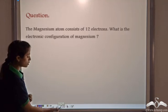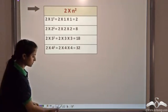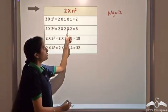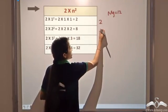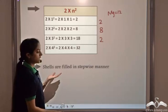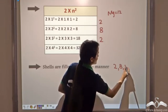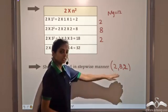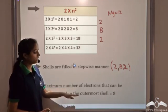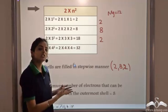The magnesium atom has 12 electrons. By the 2n² rule, the first shell takes 2 electrons and the second shell takes 8. The remaining 2 electrons go to the third shell. Shells are filled stepwise: K shell first, then L shell, then M shell with 2 electrons. The outermost shell has only 2 electrons, so it obeys all three rules. The electronic configuration of magnesium is 2, 8, 2. This is the Bohr-Berry scheme for arranging electrons in shells.